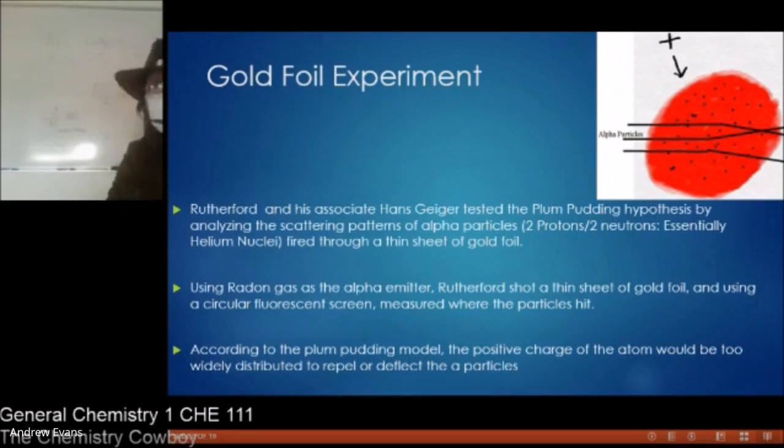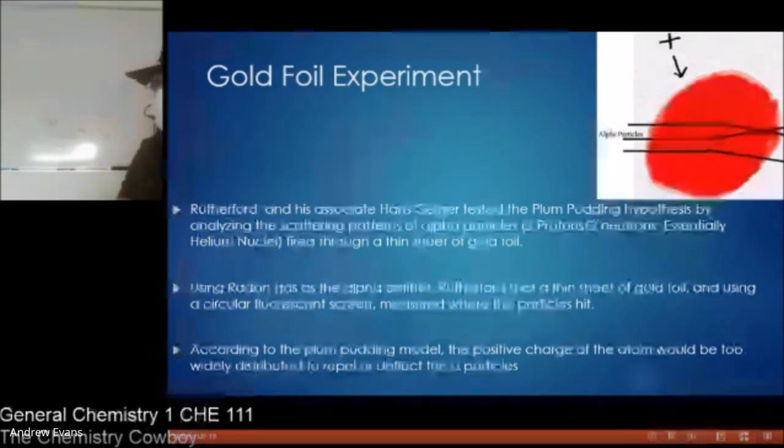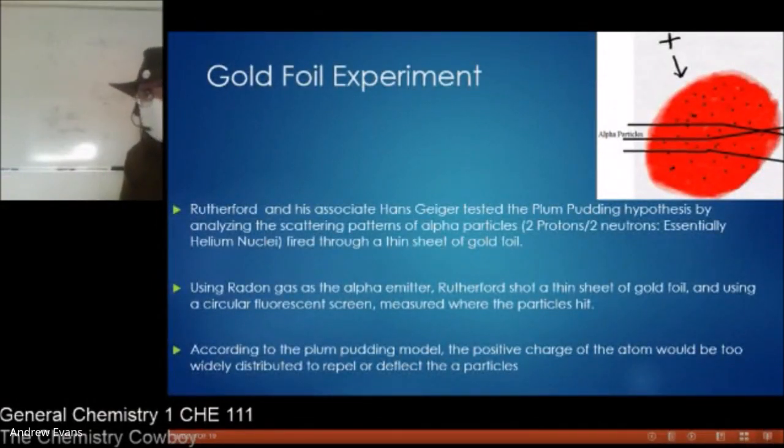Now, the beauty of this is we are going to test this plum pudding model, this is what we would expect to see if this works. So this chemist by the name of Rutherford and his associate Hans Geiger, of the Geiger counter fame, tested this plum pudding model hypothesis by analyzing the scattering pattern of alpha particles. An alpha particle is a two-proton, two-neutron particle that looks like a positive helium nucleus. But it's a magical particle that's pretty heavy and pretty positive. It's doubly positive. And they're going to shoot this into a thin sheet of gold foil.